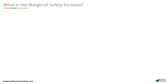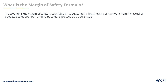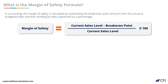Let's take a closer look at the margin of safety formula. In accounting, the margin of safety is calculated by taking the actual or budgeted sales, subtracting the breakeven point amount, and then dividing by sales. It is expressed as a percentage.